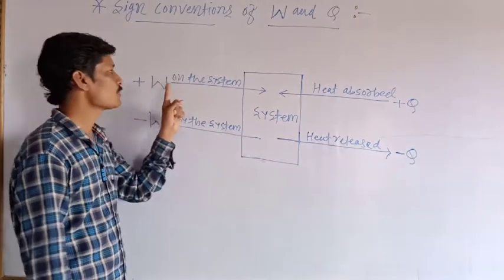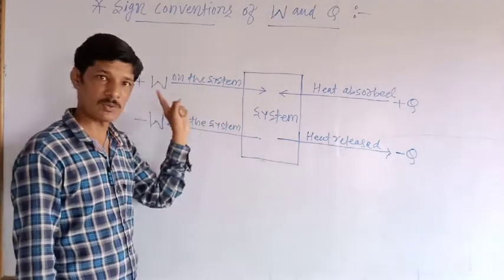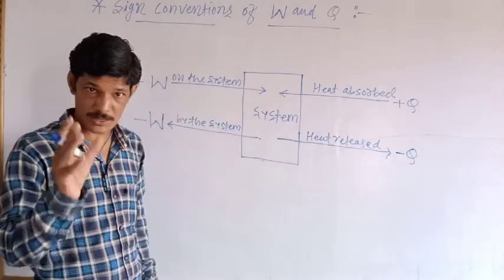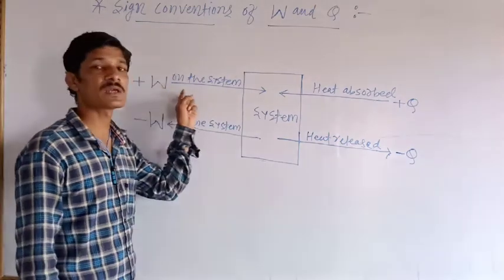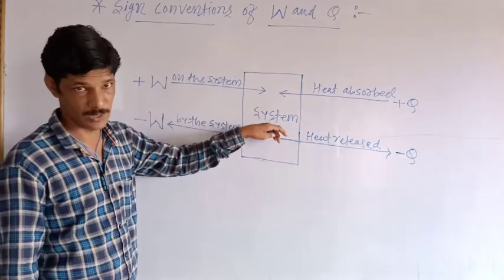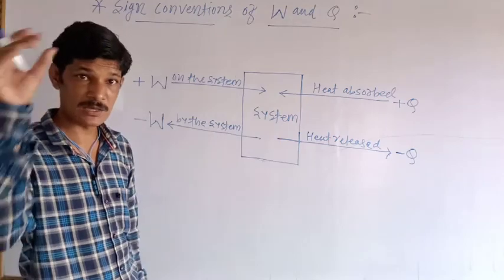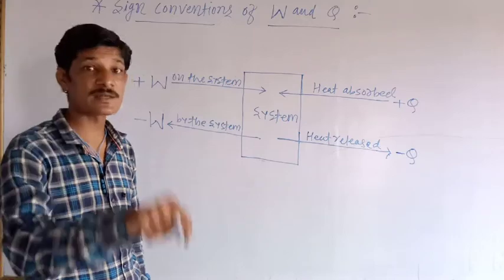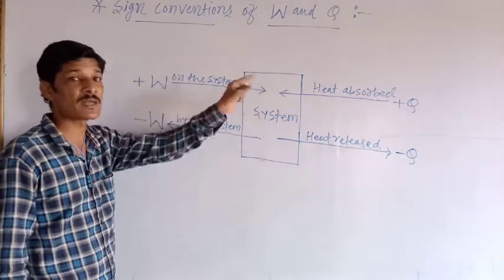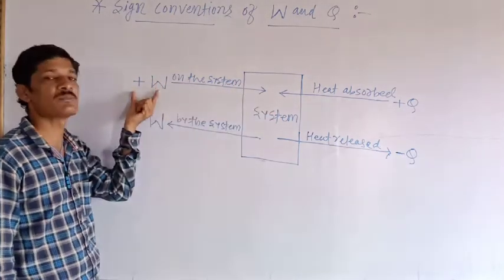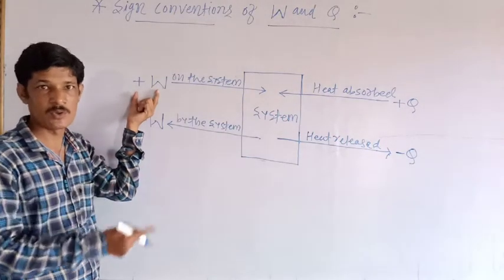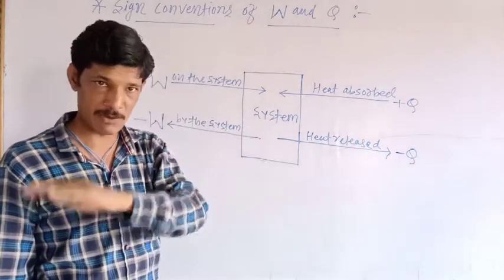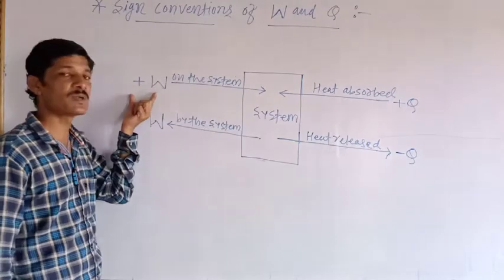The work is done on the system by the surroundings. What is plus W? When the surroundings do work on the system, then the sign is plus W.